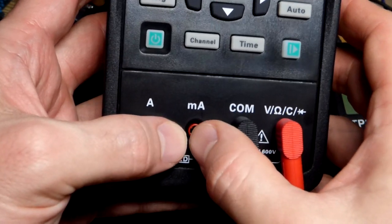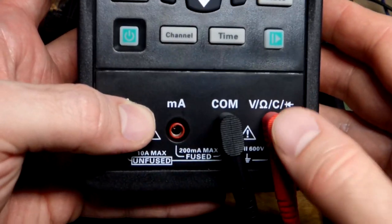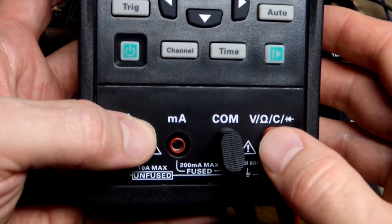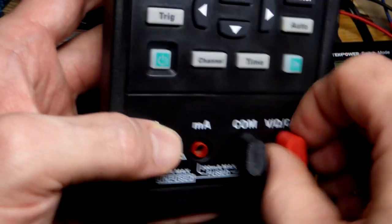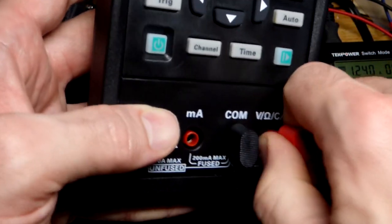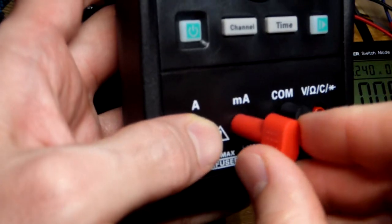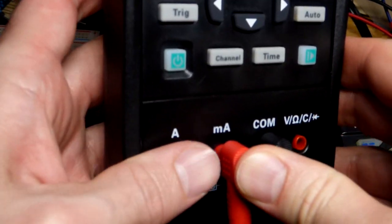We are first going to measure milliamps of current. So the red probe, generally you can leave where voltage resistance. Usually you're taking voltage measurements. So you might as well leave it there when you're not using the meter. Now we've got to move it to the milliamp setting.